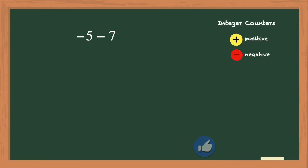Now let's look at negative 5 minus a positive 7. The first term of negative 5 means that we will place 5 negative counters first. Then we'll look at the minus positive 7. Again, the minus means to remove, and the positive 7 means to remove 7 positive counters.